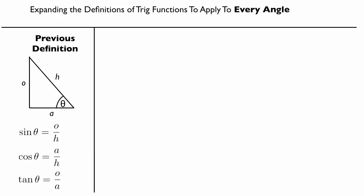But what if we want to make up a definition that allows us to find the sine of something like 122 degrees or 279 degrees — an angle that's bigger than 90 degrees? This is how we do it.